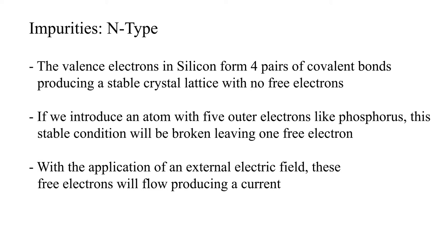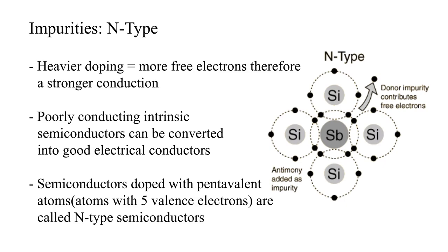It will be free to move about the crystal lattice, not being bound to the phosphorus atom. There will be many of these free electrons if more impurity atoms are introduced. With the application of an external electric field, these free electrons will flow, producing a current.